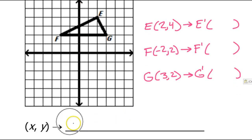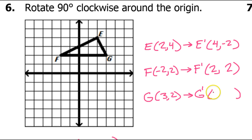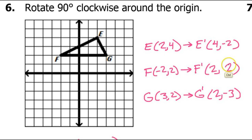So we write down y and then opposite of x. Applying to our points: y is 4, opposite of x is negative 2; y is 2, opposite of x is positive 2; y is 2, opposite of x is negative 3. If you say 'opposite of x' every time, you'll do it right. If you say 'y negative x,' you'll be tempted to put a negative sign on the 2, but it's not negative 2 — it's the opposite of x, and since x is negative, the opposite of x is positive. Say 'opposite of x' instead of 'negative x' to avoid that mistake.